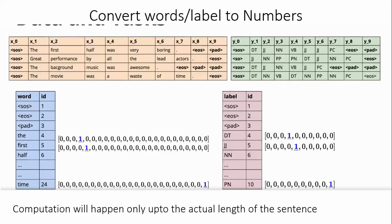How are we going to convert these words and labels into numbers? SOS is represented here as ID 1. The three special symbols — SOS, EOS, PAD — are represented by IDs 1, 2, and 3. Starting from the 4th position, we begin assigning IDs to the actual words.